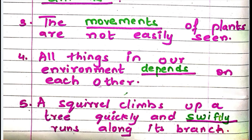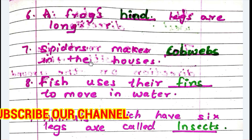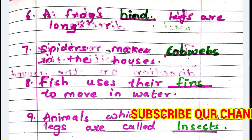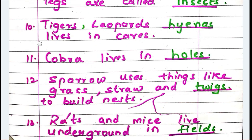Number five: a squirrel climbs up a tree quickly and runs along its branches — answer: swiftly. Number six: a frog's — answer: hind — legs are long. Number seven: the spiders make — answer: cobwebs — in the houses. Number eight: fish uses their — answer: fins — F-I-N-S — to move in water. Number nine: animals which have six legs are called insects.